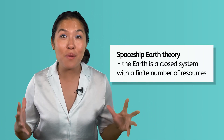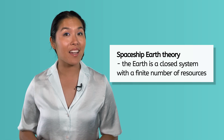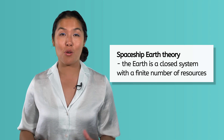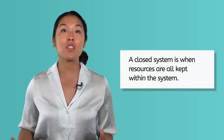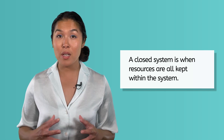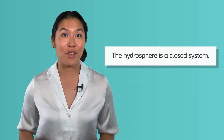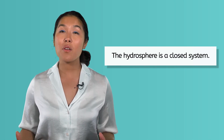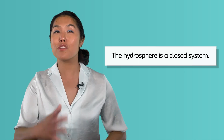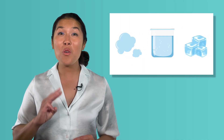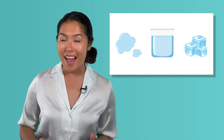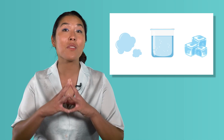Think back to our first lesson, when we talked about the spaceship Earth theory that described the planet like a spaceship, or a closed system, with a finite number of resources. Do you remember what was meant by a closed system? A closed system is when resources are all kept within the system, but used in different ways. The hydrosphere is a closed system. The water on Earth does not leave the planet, but moves through the water cycle. In fact, water is the only substance to naturally exist in all three phases — solid, liquid, and gas — within the range of temperatures regularly found on Earth.